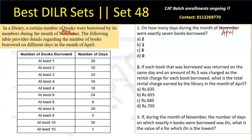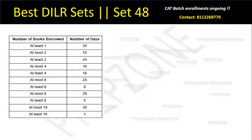What the table says is: at least one book was borrowed on 30 days. 'At least one' means one, two, three, four, five — any number up to the maximum. Similarly, at most ten books were borrowed on ten days. There are also questions about exactly how many books were borrowed on certain days. We essentially need to find out: how many days was exactly 1 book borrowed, exactly 2, exactly 3, and so on up to 10.